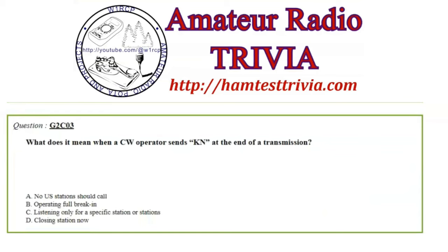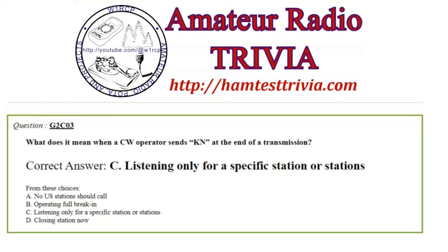Question 3: What does it mean when a CW operator sends KN at the end of a transmission? Choices: A) No U.S. stations should call, B) Operating full break-in, C) Listening only for a specific station or stations, D) Closing station now. When you do a proper CW call — maybe a 2x3 or 1x2 — where you say KO4NLL de W1RCP, KN — that means I'm listening only for a specific station. That is the correct answer.